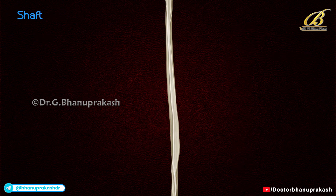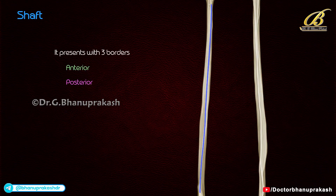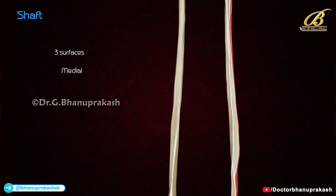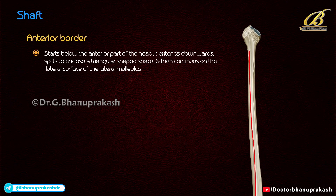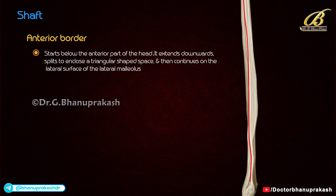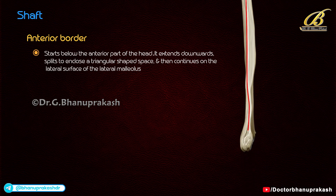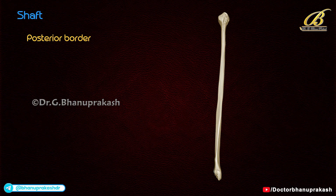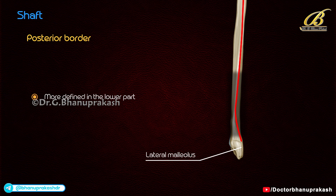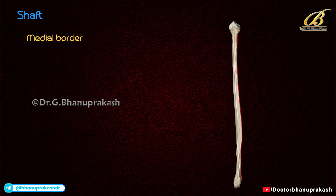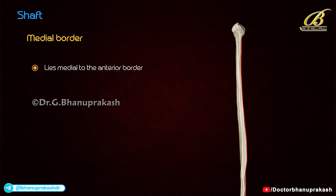The shaft presents with three borders — anterior, posterior, and medial — and three surfaces — medial, lateral, and posterior. The anterior border starts below the anterior part of the head, extends downwards, splits to enclose a triangular-shaped space, and then continues to the lateral surface of the lateral malleolus. The posterior border extends from the posterior aspect of the head to the lateral margin of the groove on the posterior surface of the lateral malleolus, and is more defined in the lower part.